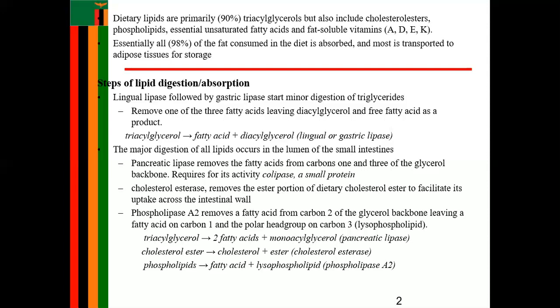The major digestion of all lipids occurs in the lumen of the small intestine, where almost all lipids are broken down into smaller components that can be absorbed by the body tissue. Here, secretions from the pancreatic lipase remove the fatty acids from carbons one and three of the glycerol backbone, requiring colipase as well as a small protein for its activity.